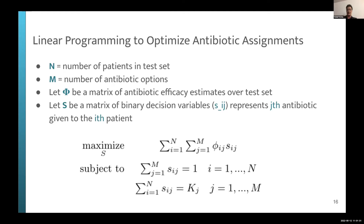We define S as a matrix of binary decision variables where S_ij equals 1 if the j-th antibiotic is given to the i-th patient. We maximize total predicted efficacy subject to two constraints: only one antibiotic per patient, and a budget constraint on how many times each antibiotic can be prescribed. This budget is important because the naive solution — giving the most broad-spectrum last-line antibiotic to everyone — accelerates resistance. The budget parameters can be set to match what clinicians actually prescribed.